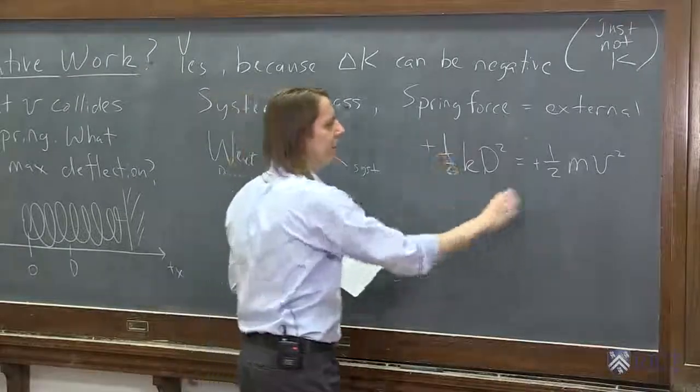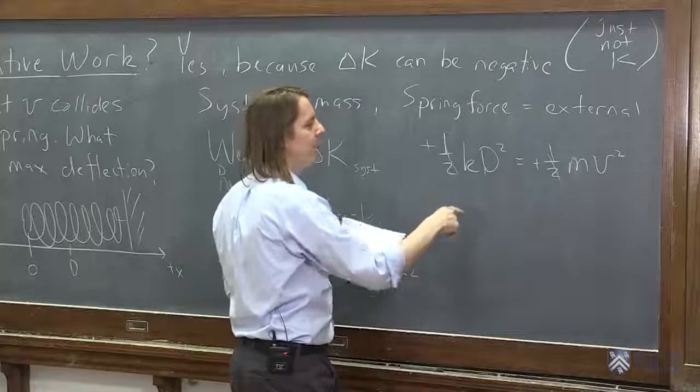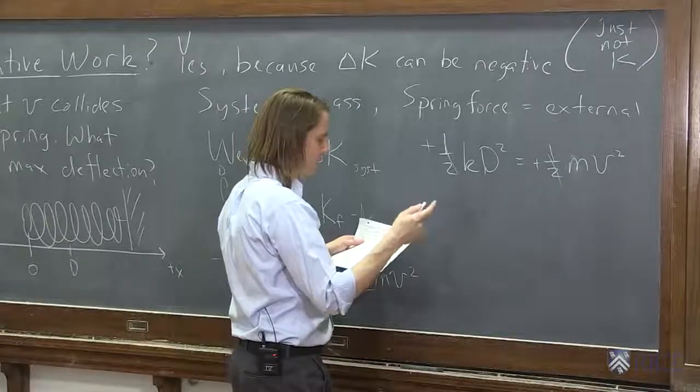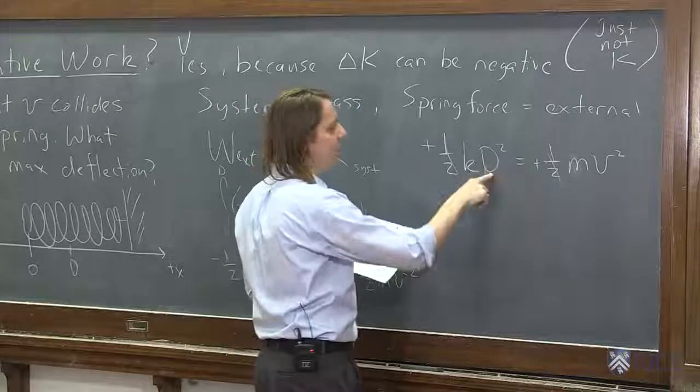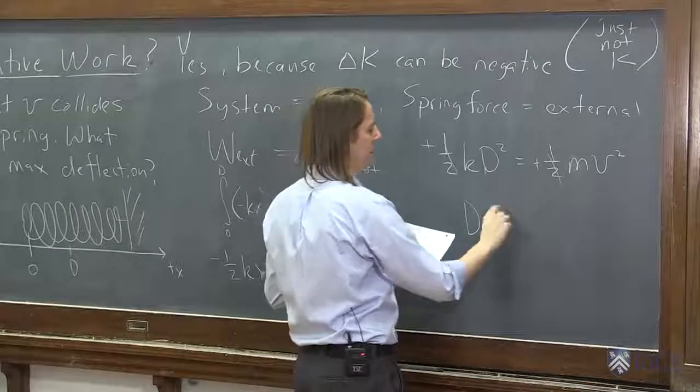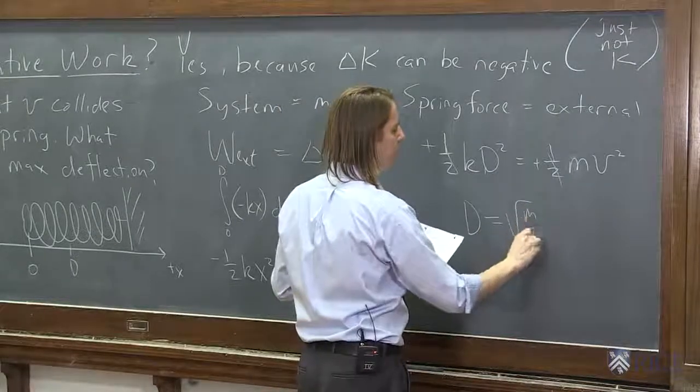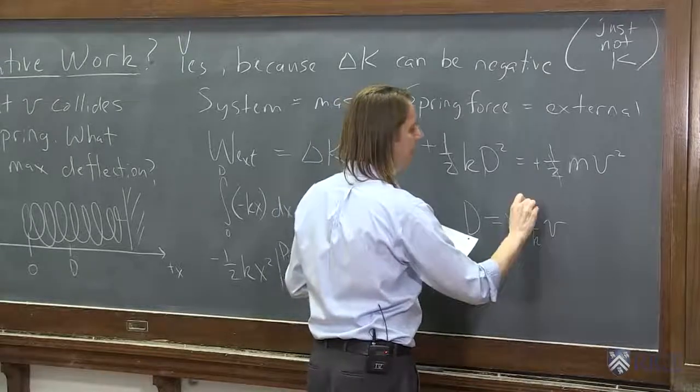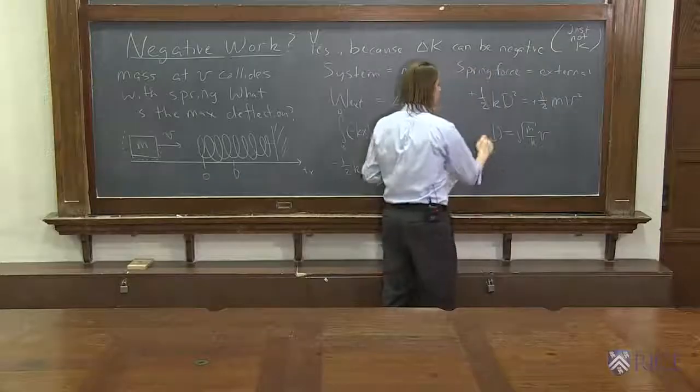I guess we should finish this. The one-halves go away, and this comes over here. And v becomes, oh no, I'm sorry, xD is what we're solving for. The D, the displacement, becomes the square root of m over k times v. So there's the answer.